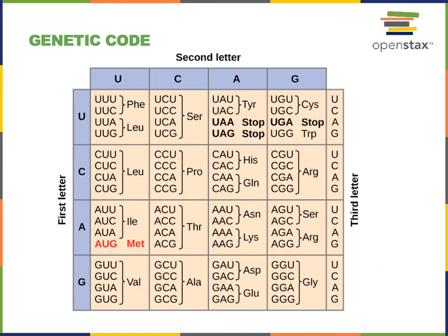The genetic code specifies a particular amino acid that will be incorporated into a polypeptide during translation corresponding to each three-letter nucleotide sequence, or each codon. The basic idea that a three-nucleotide sequence codes for one amino acid is the key concept to understand here.